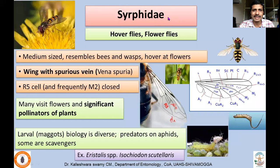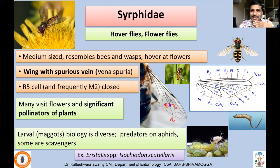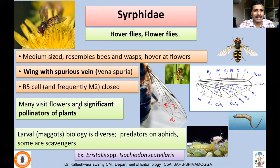Starting Cyclorrhapha with Syrphidae — hoverflies or flower flies. Being flower flies, they are beneficial as pollinators. They are medium-sized and resemble bees and wasps, hovering over flowers. A very characteristic family-level character is the spurious vein called vena spuria — an additional vein between the radius and media with no functional significance. The R5 cell is also closed.